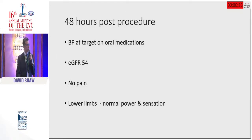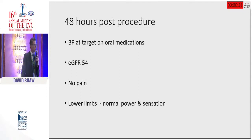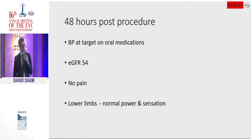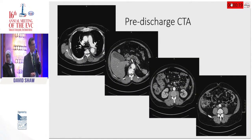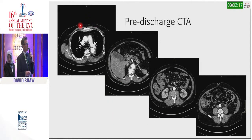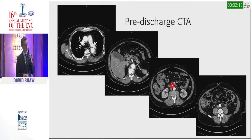Forty-eight hours post-procedure, this patient's blood pressure had normalized and was stable on oral medications. His eGFR had improved, he had no pain, and there were no neurological symptoms. His pre-discharge CT demonstrates that his false lumen had thrombosed and the treated segment of the abdominal aorta had gone to a single lumen, though just above the aortic bifurcation there remained some residual dissection.